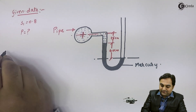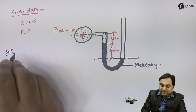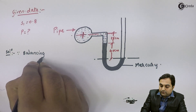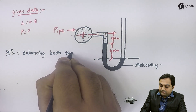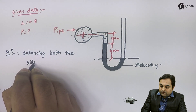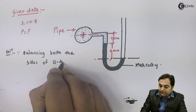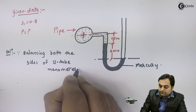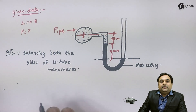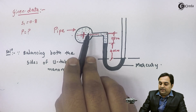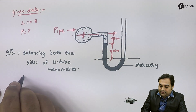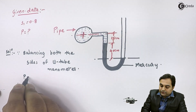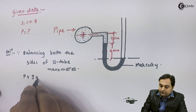In the solution, since we are balancing both sides of the U-tube manometer, I'll start from inside the pipeline where we have pressure P. At the same time we have a fluid column of 15 centimeters height, so its pressure contribution is rho × g × H.